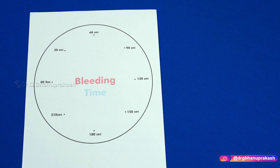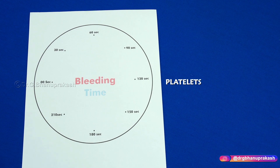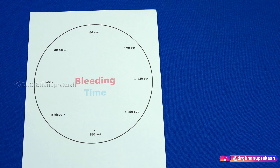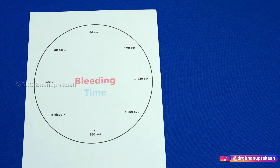First we are discussing bleeding time, and later we shall discuss clotting time. Bleeding time is used to assess the platelets. For example, if platelets are low — thrombocytopenia — bleeding will continue and lead to increased bleeding time. If platelets are at a normal value, they will form a platelet plug, leading to stoppage of bleeding, which is hemostasis. So bleeding time is mainly used to assess platelet function.